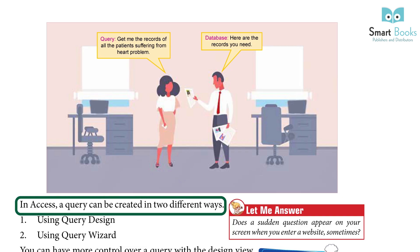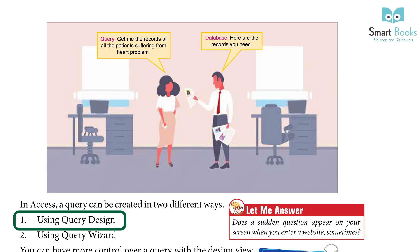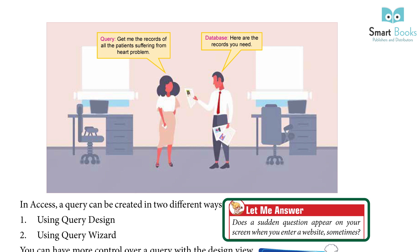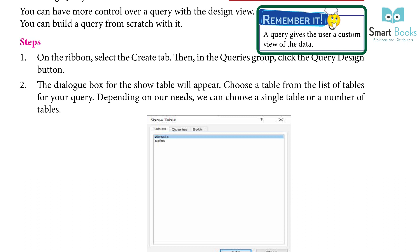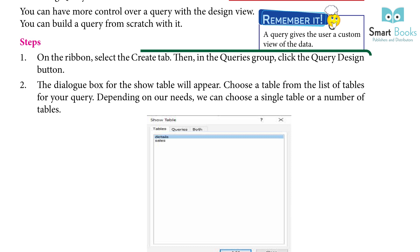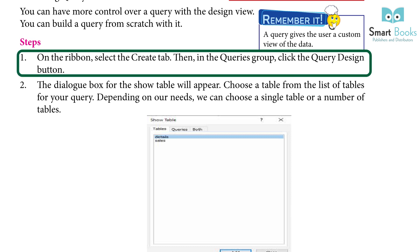In Access, a query can be created in two different ways: one, using Query Design; two, using Query Wizard. With the Design View, you can build a query from scratch and have more control over it. Remember: a query gives the user a custom view of the data.